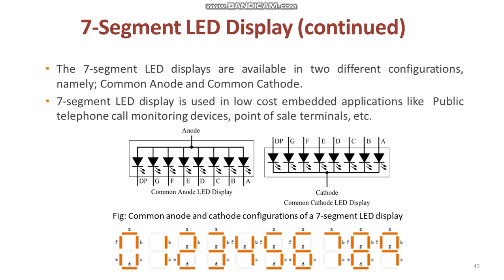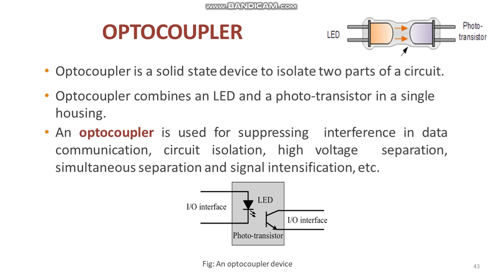So this is about the seven segment LED display configuration. Next, moving on to the optocoupler. An optocoupler is an electronic component that interconnects two separate electrical circuits by means of a light-sensitive optical interface. Optocoupler combines an LED and a phototransistor in a single housing. The diagram illustrates the functioning of an optocoupler device. In electronic circuits, an optocoupler is used for suppressing interference in data communication, circuit isolation, high voltage separation, etc.